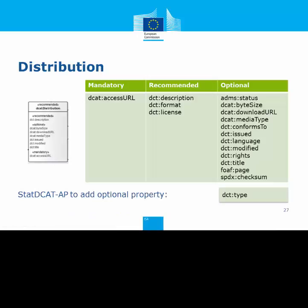For the distribution, STAT-DCAT-AP adds the possibility to link to a visualisation of the data — for example, a document or web page where a tabular or graphical representation of the data can be viewed, or an interactive service where the data can be accessed and viewed. This is achieved by adding the type property to distribution.